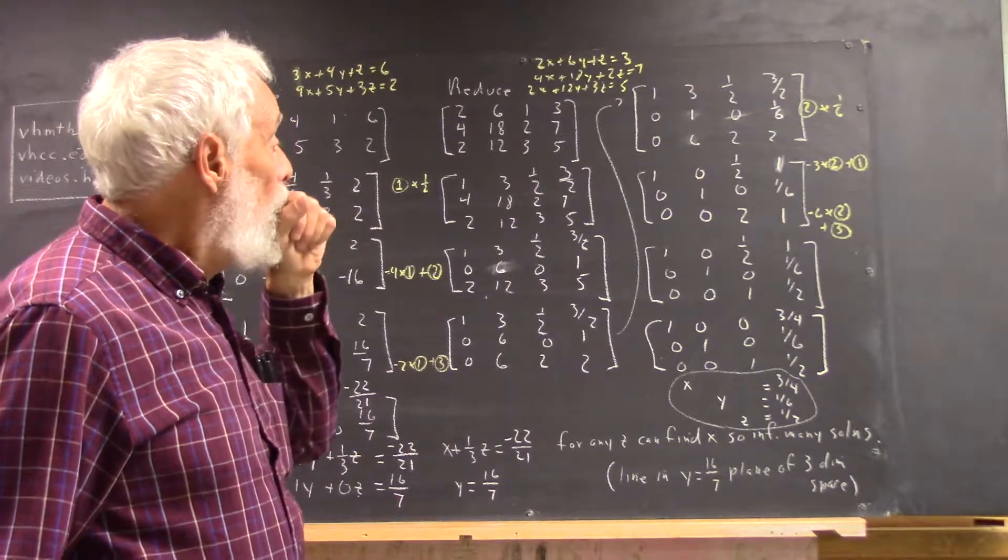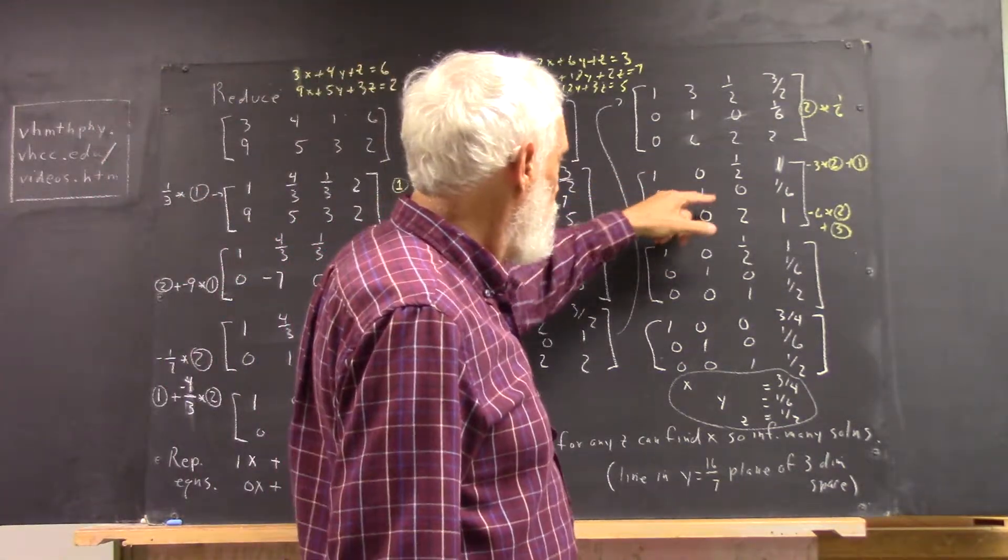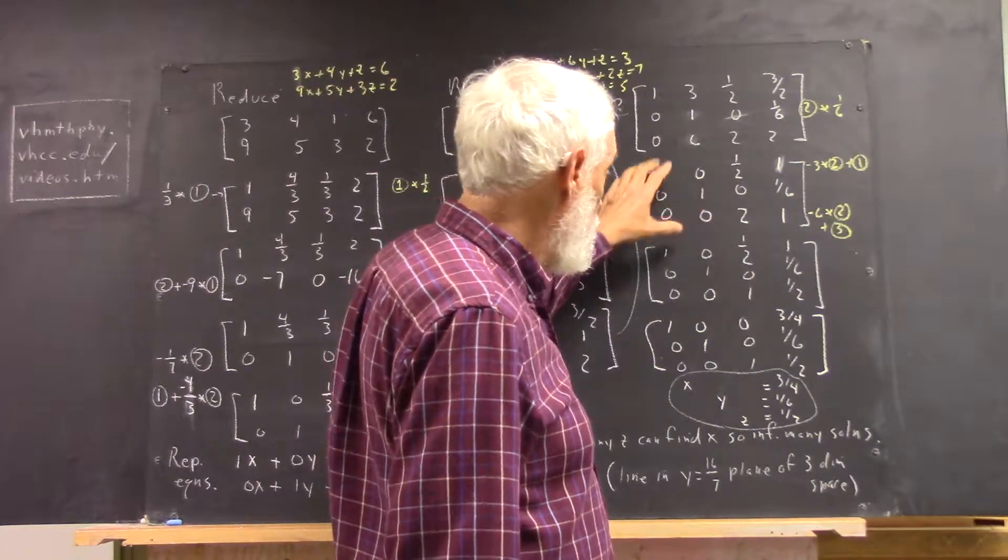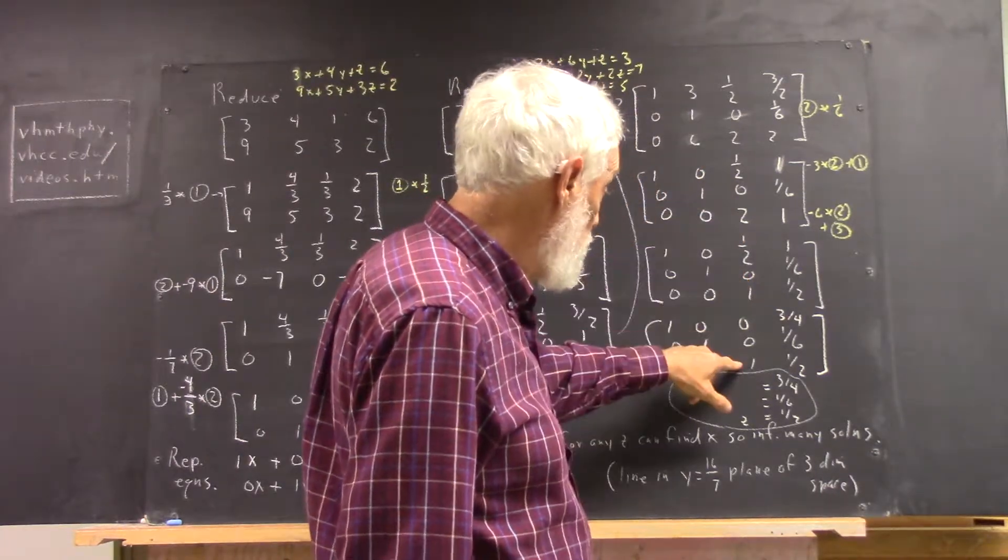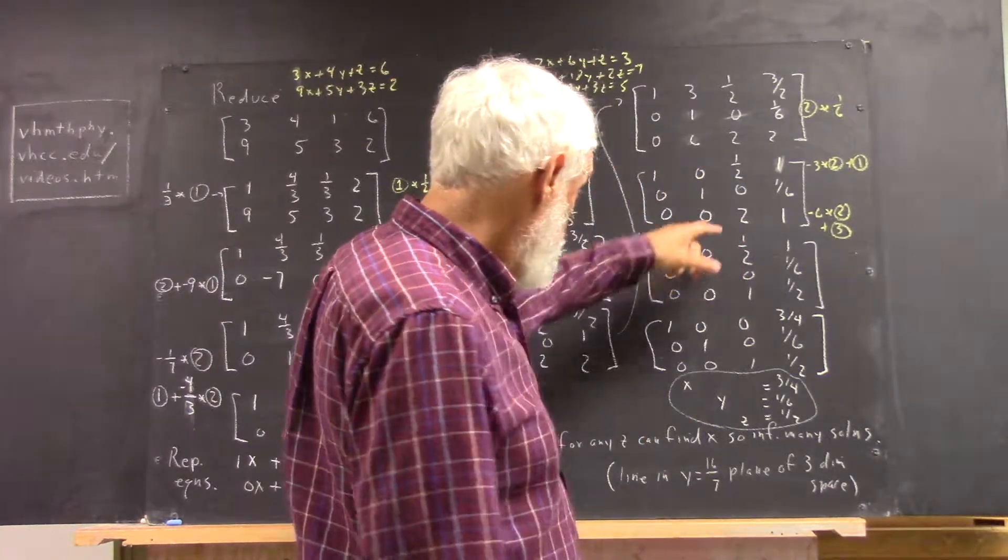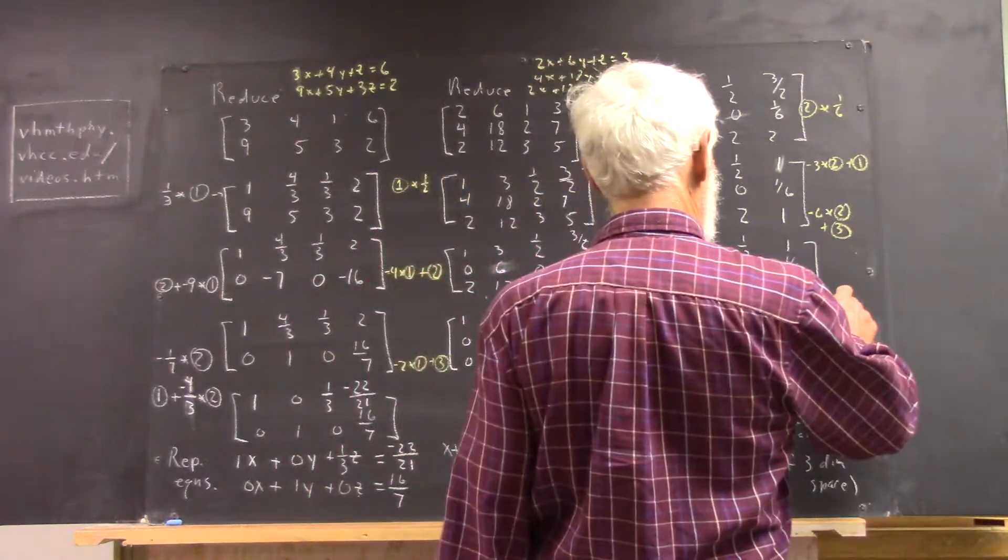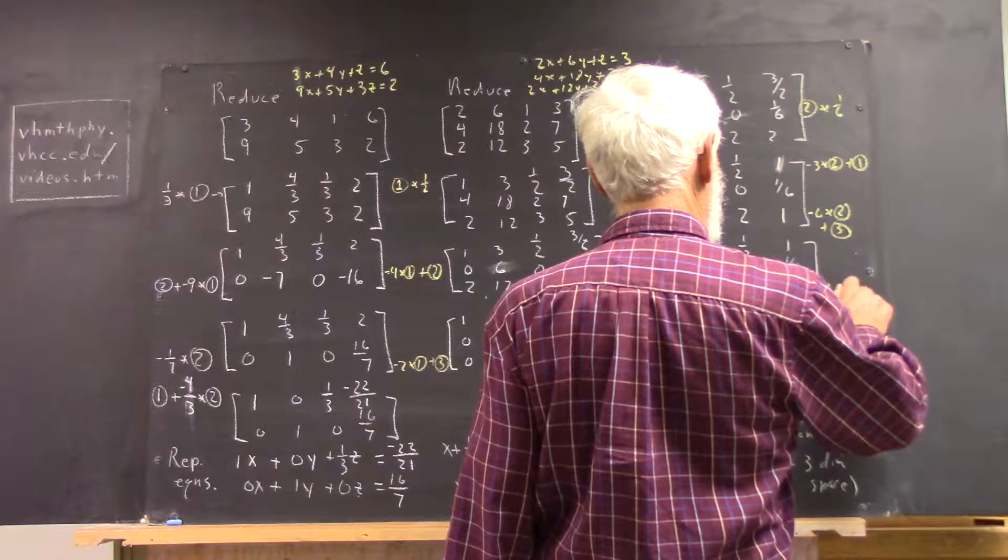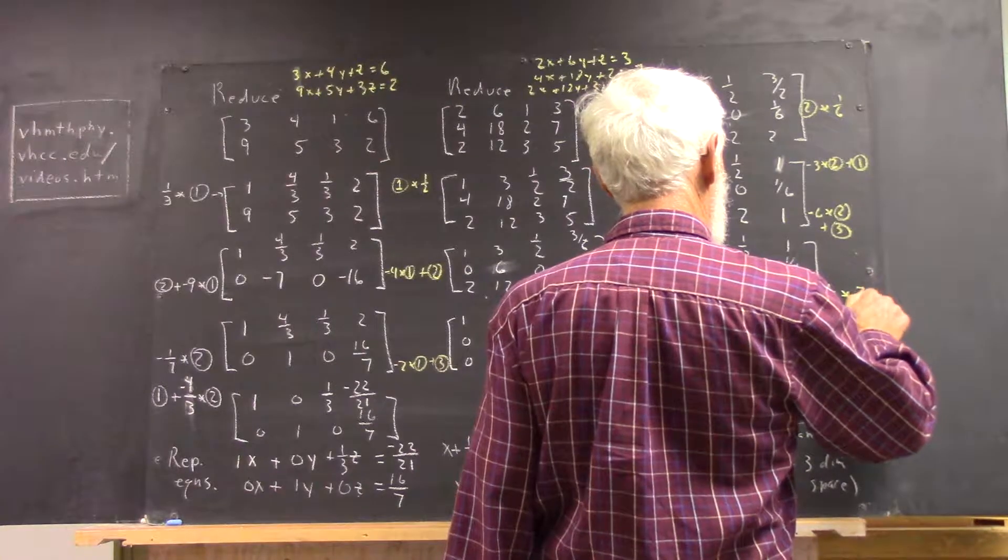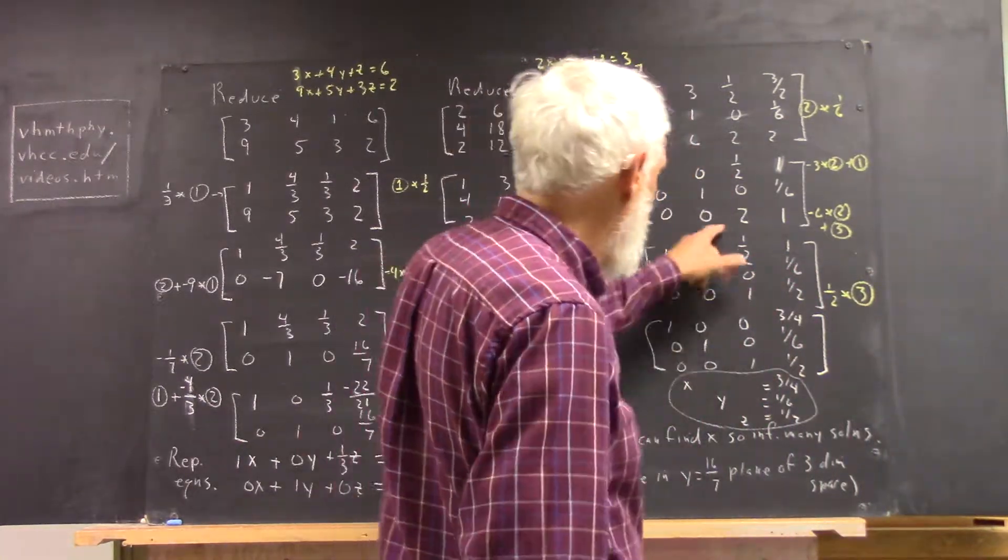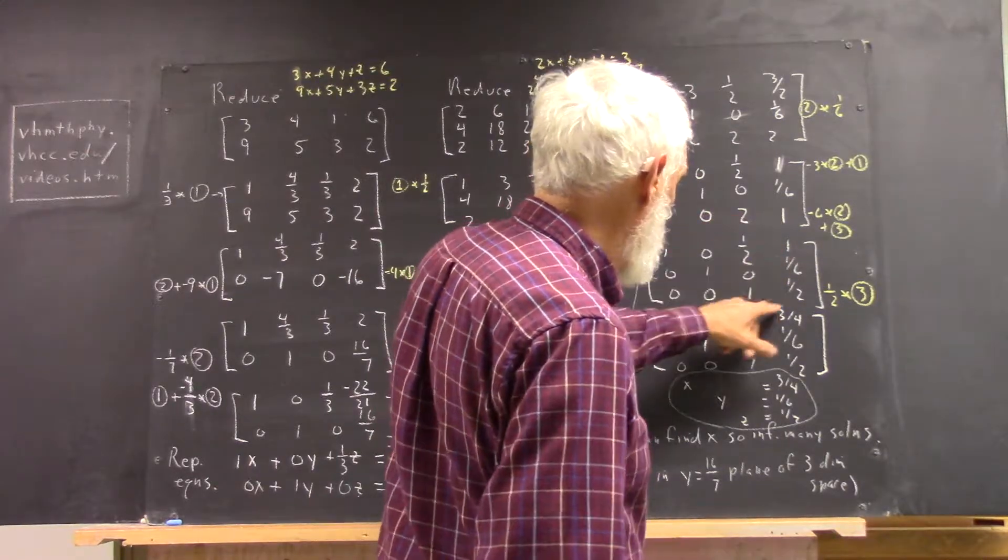So now, what do we have? Well, we're starting to develop our identity matrix, everything's looking good, but we need a 1 down here, don't we? So, we take half of the third row. Half of the third row, and it's very clear, it's going to give us 1, 1 half.